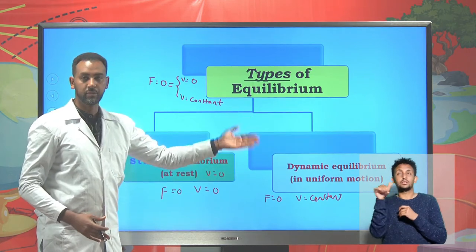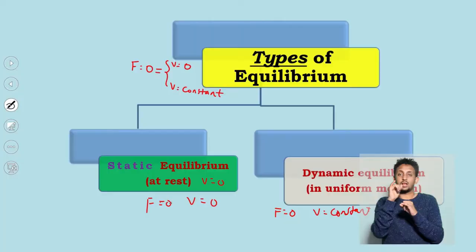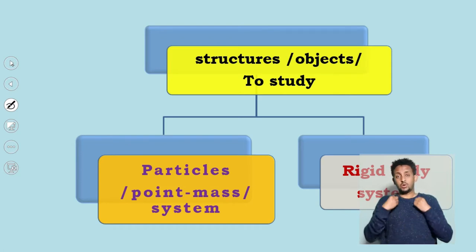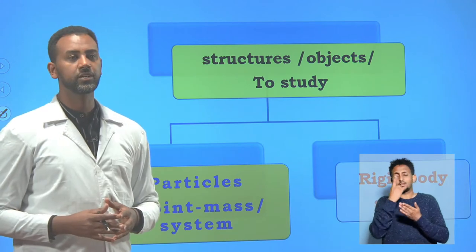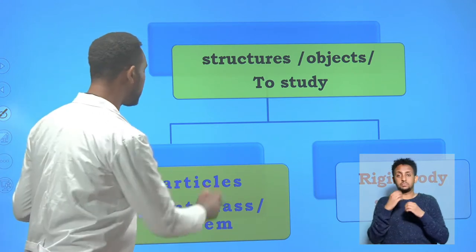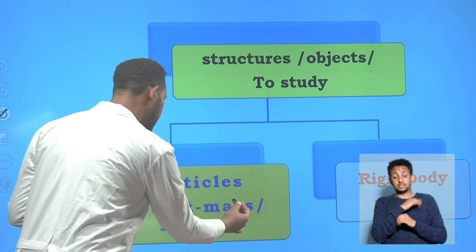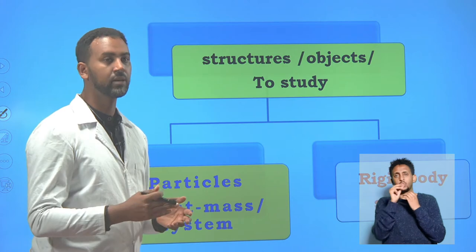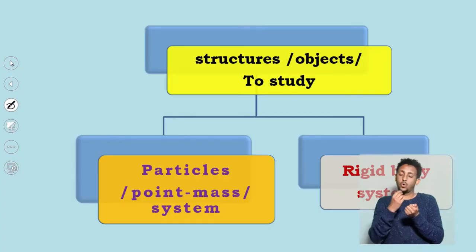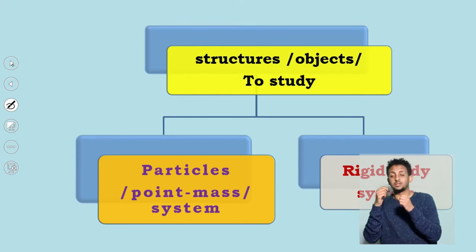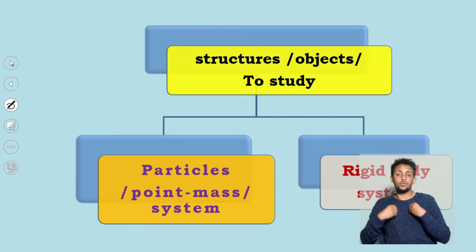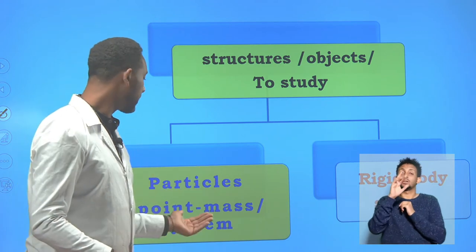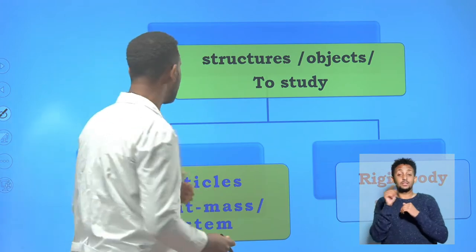The objects we are going to study can be categorized into two types: particle systems, also called point mass systems or mass-string systems, and rigid body systems. Rigid bodies include structures like bridges, bars, and cantilevers. We will focus on both rigid bodies and particle systems as the structures we are going to deal with.